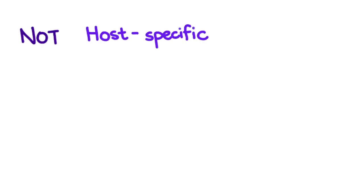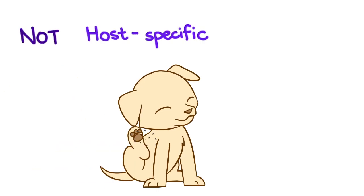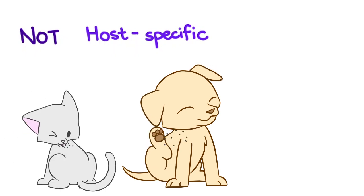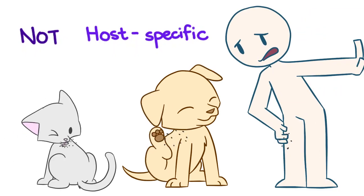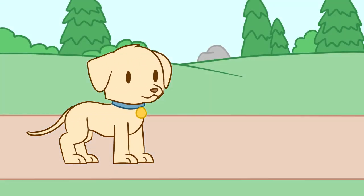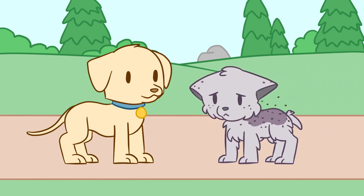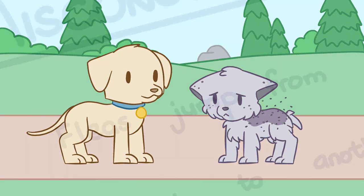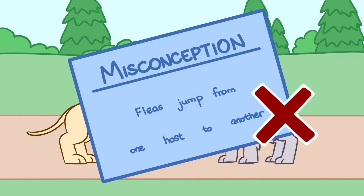Even though they're called cat and dog fleas, they're not host-specific. You can find a cat flea on a dog, and a dog flea on a cat. They even feed on humans if neither are present, though they prefer dogs and cats. A dog or cat can pick up fleas from the environment where a flea-infested animal frequents, or from a very heavily parasitized animal — emphasis on very heavily, because unless there are way too many fleas on one animal, fleas rarely leave the comfortable host they've got. It's a misconception that fleas jump from one host to another.